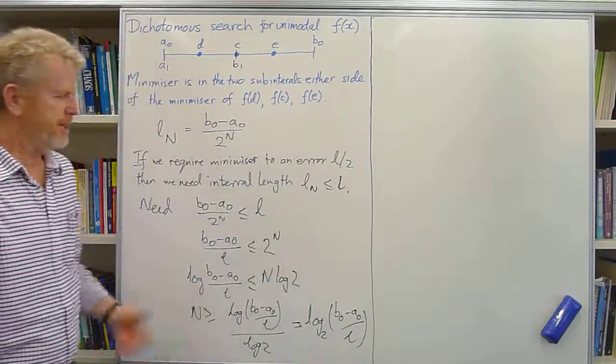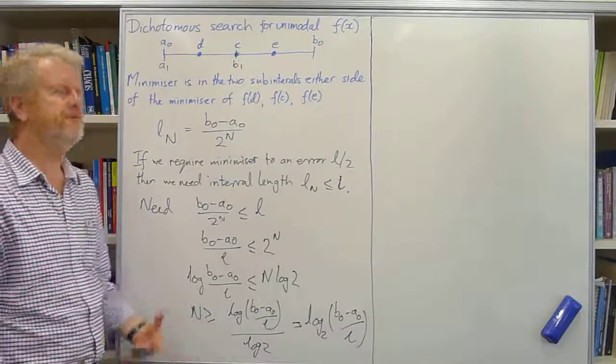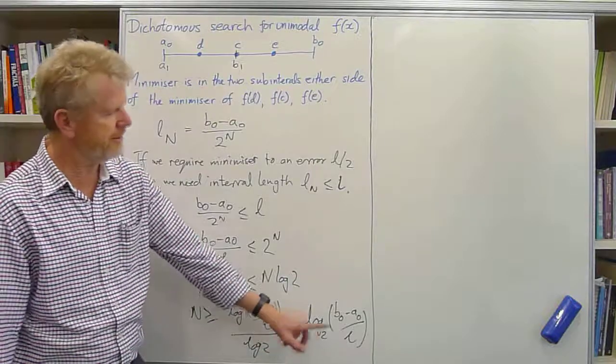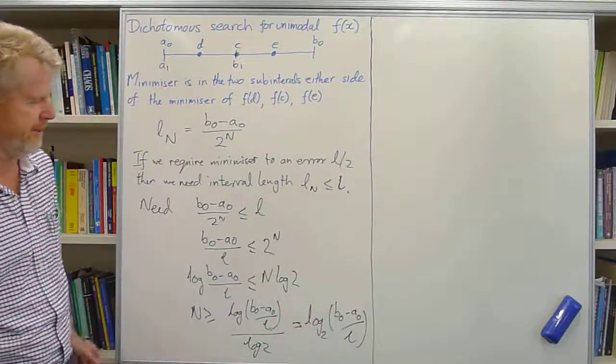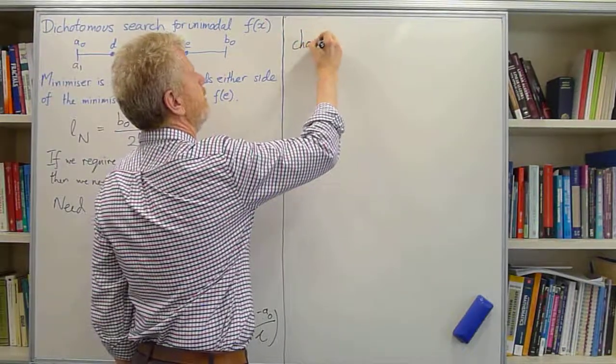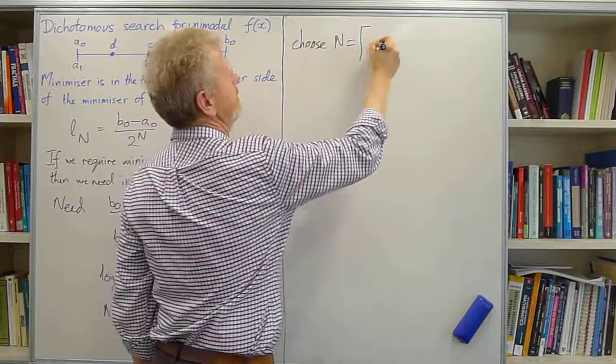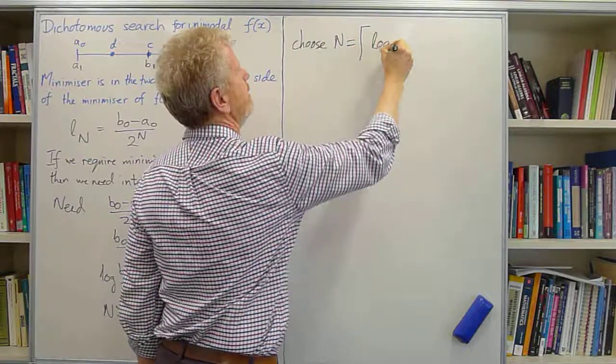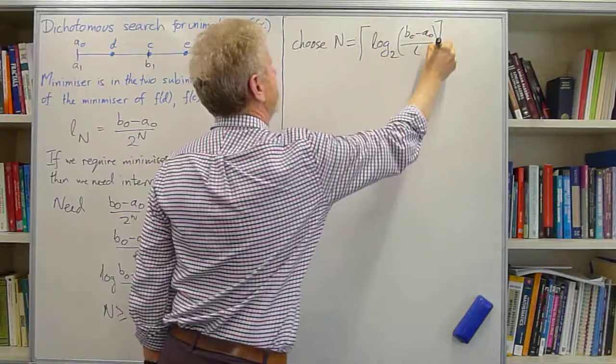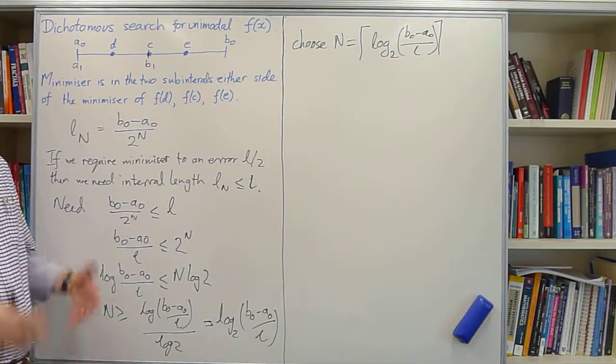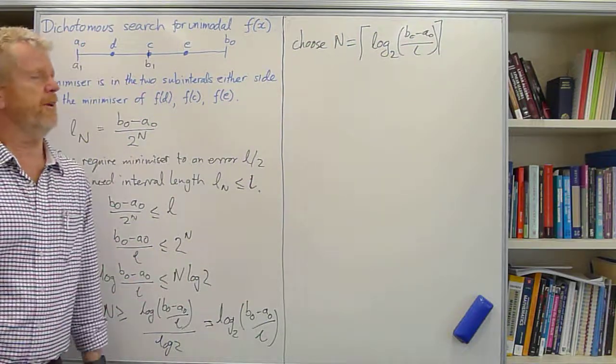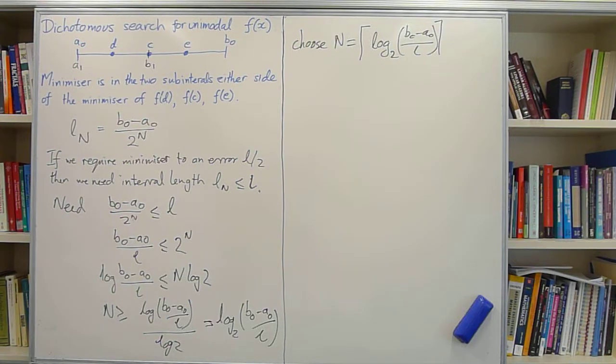So n has to be bigger than or equal to that, and the smallest n, the fewest amount of iterations, is when n is the smallest integer that's just bigger than or equal to that. And we denote that as the ceiling function, so the ceiling of log base 2 of b0 minus a0 over l. And so right at the outset, we know how many iterations we need to do, and we can code that. So here we go!